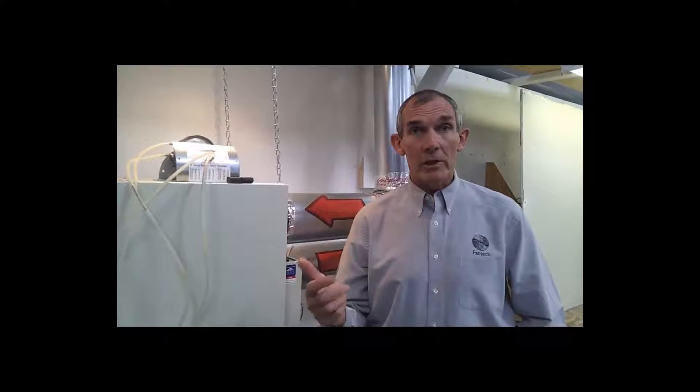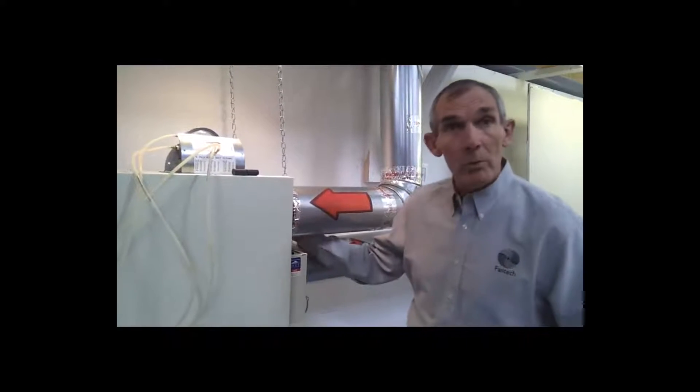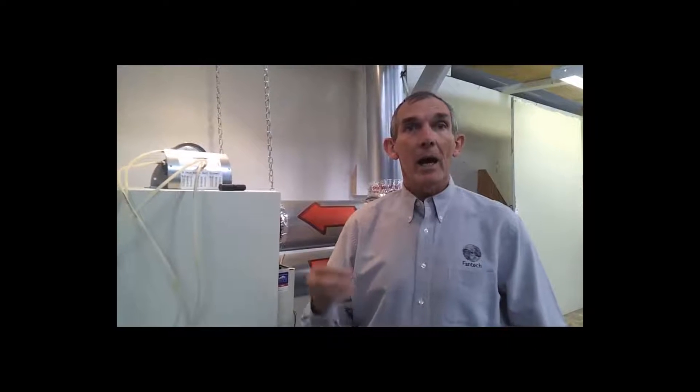Balancing your Fantec heat or energy recovery ventilator. A few points before you start balancing. One, make sure that the unit is not in defrost. Two, prior to balancing turn off all the exhaust fans in the house - that's the kitchen fan, the bathroom fan, the dryer fans. Open the balancing damper on the unit which is integral, and make sure that if it's attached or ducted into a heating or ventilation system, that system is operating on high.